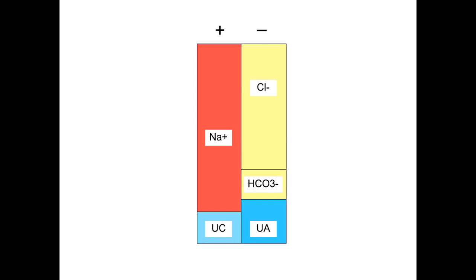In serum, the number of positive charges equals the number of negative ones. The positives consist primarily of sodium, with everything else being lumped together as unmeasured cations, a conglomeration of potassium, calcium, magnesium, etc.